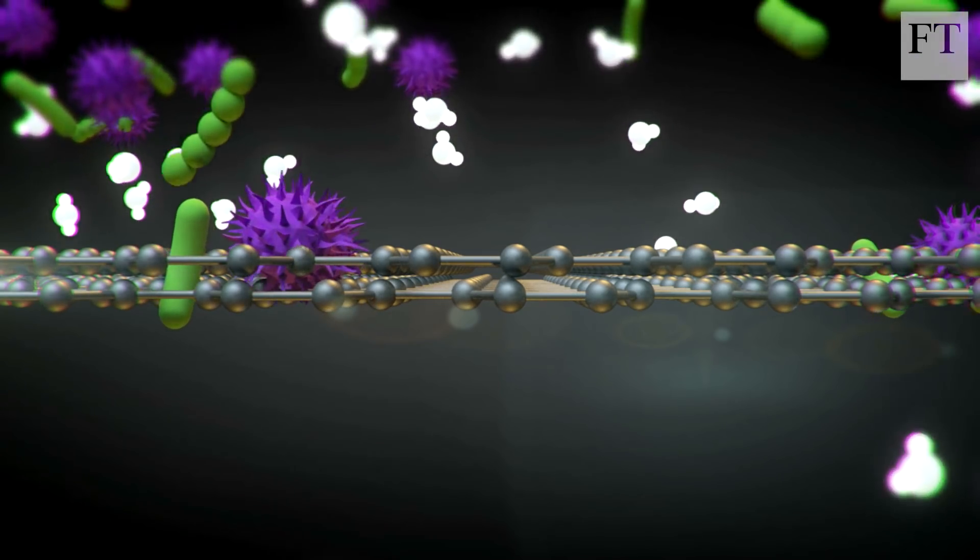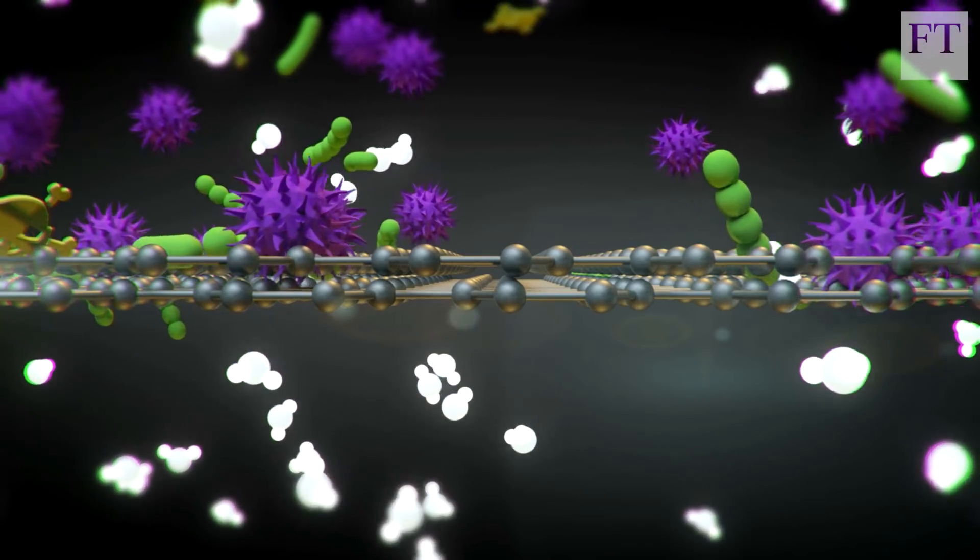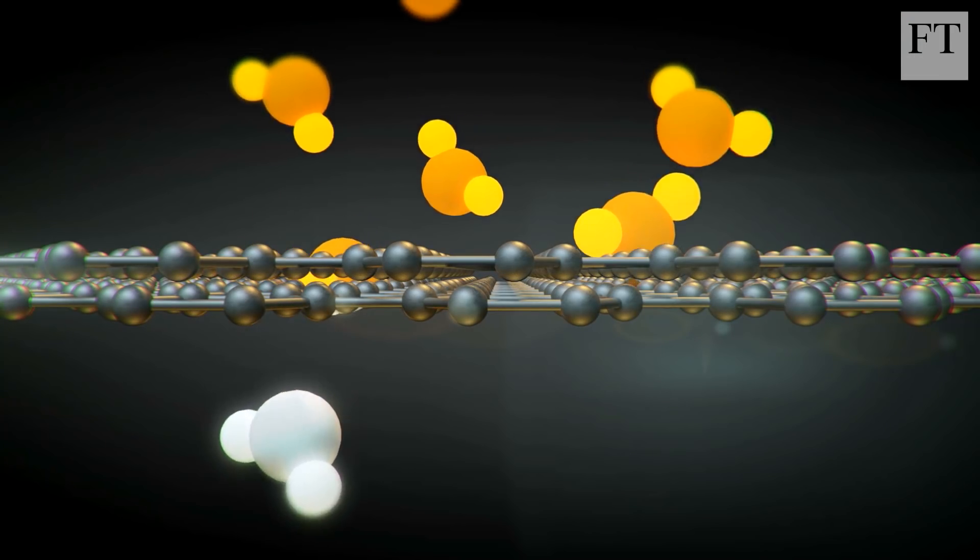Current filters can remove microbes, bacteria and viruses, but graphene can also take out chemicals, including heavy metals and pesticides. It can even extract the colour from whisky.